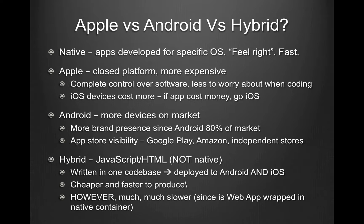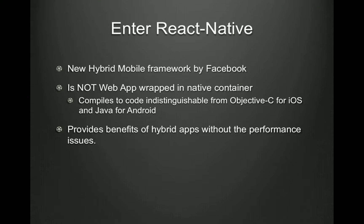Then there's Hybrid, usually written in JavaScript and HTML, not native. The main benefit is that it's written in one codebase, so it can be deployed to both Android and iOS. However, they perform much slower since they're essentially web apps wrapped in a native container. React Native, a new hybrid mobile framework by Facebook, aims to solve the previously described problems with hybrid apps. React Native does not make web apps wrapped in native containers. It's written in JavaScript and compiles to code indistinguishable from Objective-C for iOS and Java for Android, which would provide the benefit of hybrid apps without the performance issues.